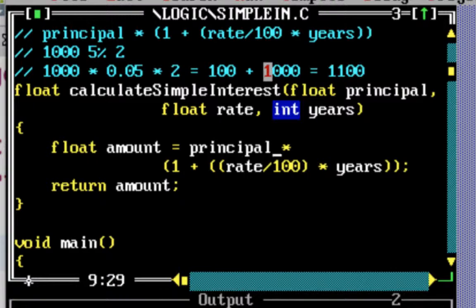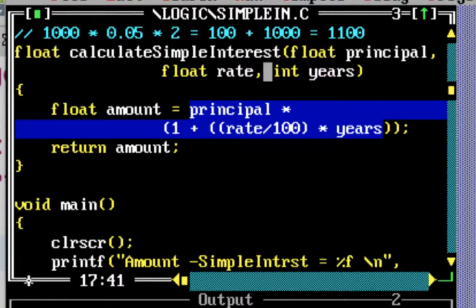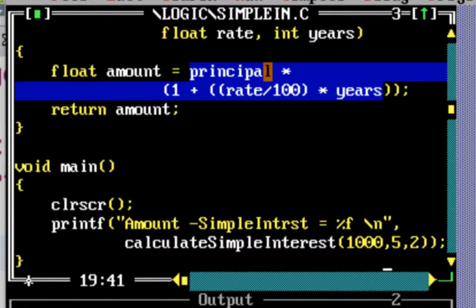If you look at the program, the program itself is very simple. It's principle multiplied by 1 plus rate by 100 into years. That's exactly the formula we wrote here, and we return the amount back. And if you look at how we invoke it from the main, that's also very simple.